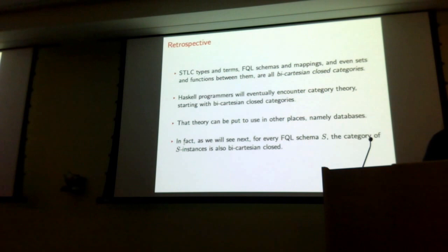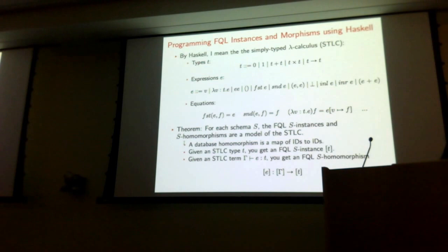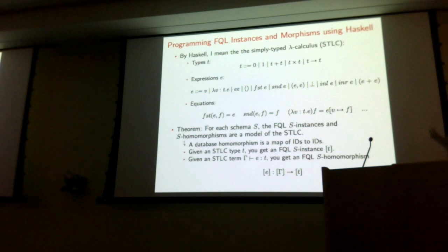Any questions before the last part? So as before this is the simply typed lambda calculus, but I'm going to change what I give you. If you give me a type in the simply typed lambda calculus, I'm going to give you an S-instance. This works for any schema — I'm going to show you this construction for just one particular schema. You give me a type, I give you an instance on that schema. And if you give me a term in the simply typed lambda calculus, I'm going to give you a homomorphism between the databases.